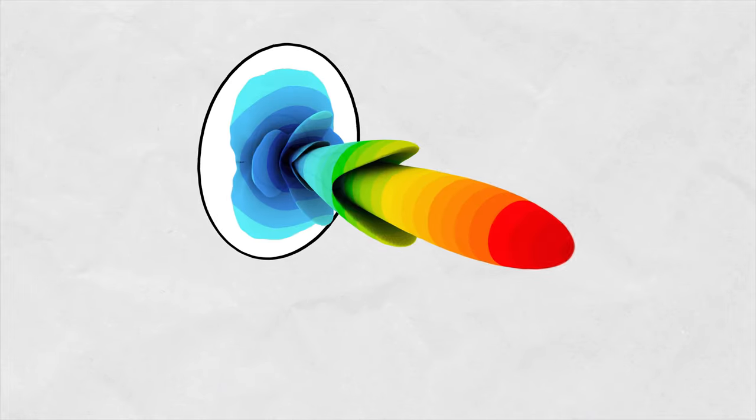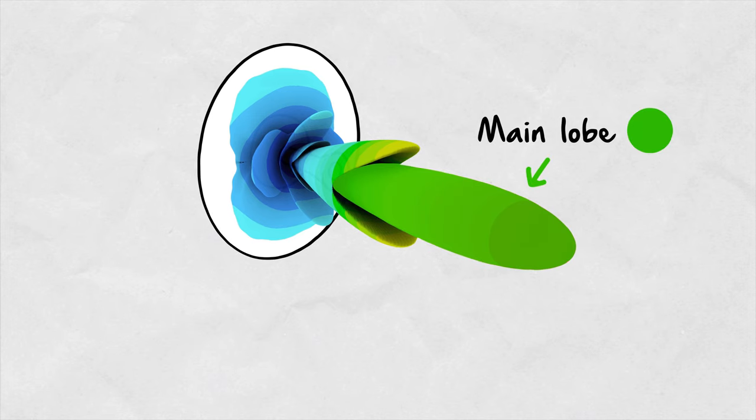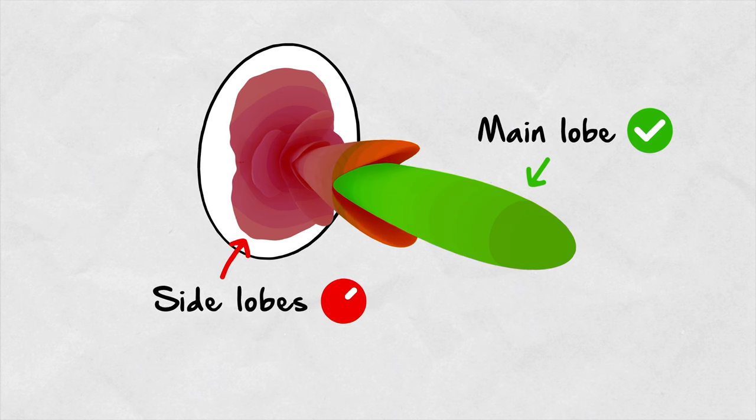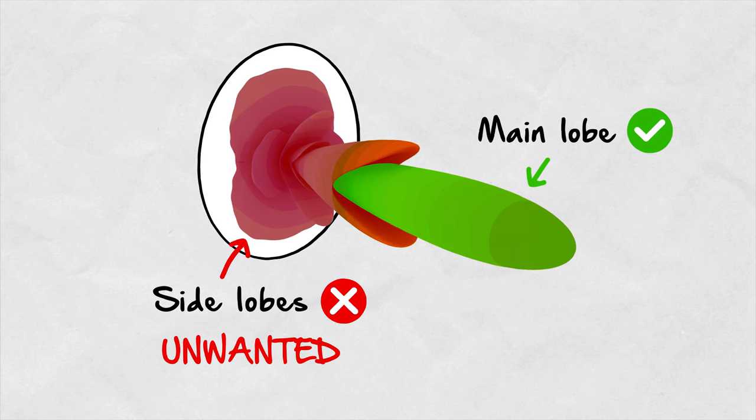Since no real antenna is isotropic, let's have a look at a real-life example, a parabolic dish antenna. It focuses the energy of the electromagnetic wave in the direction of its main axis where it's the strongest. Besides that, it also has side lobes that are weaker than the main lobe and are mostly unwanted, especially in the unlicensed frequency bands where the interference is the biggest problem.